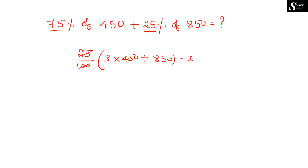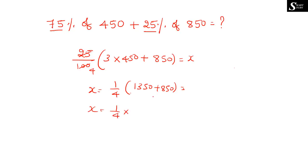So x = (1/4) of (1350 + 850) = (1/4) of 2200. Dividing 2200 by 4: 4 goes into 22 five times giving 20, remainder 2; bring down 0, 4 goes into 20 five times. So the answer for this question is 550.